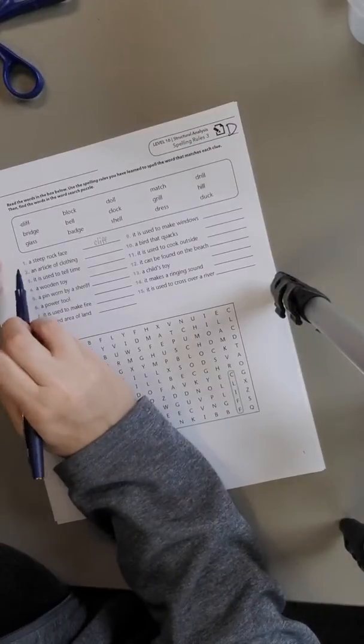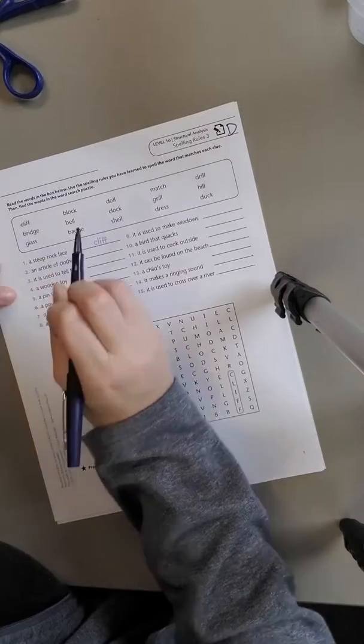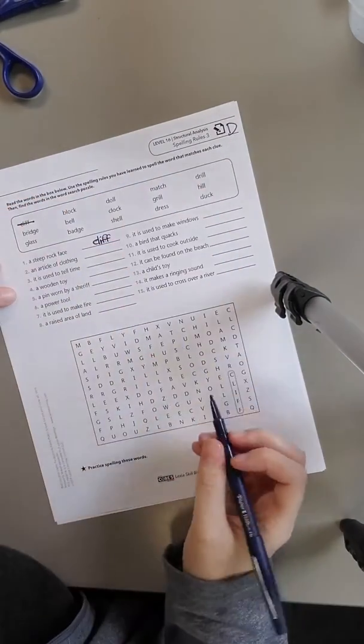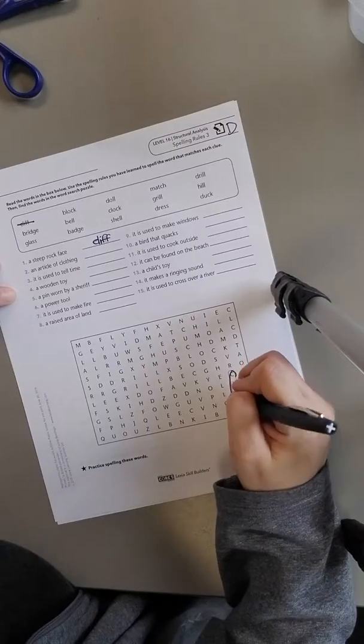They did number one for us. A steep rock face is cliff. They wrote the word cliff in the blank, scratched it out, and then looked for the word cliff in the word jumble.